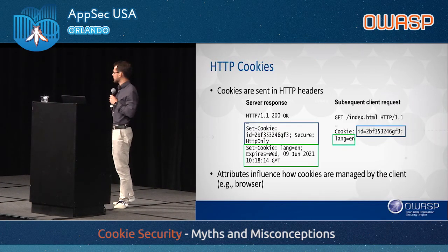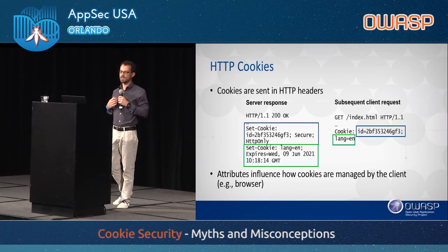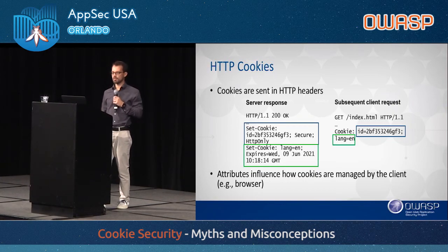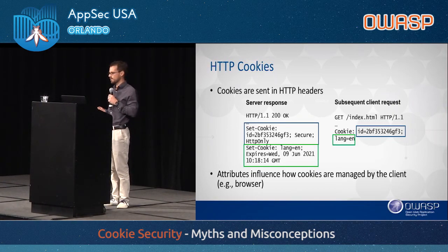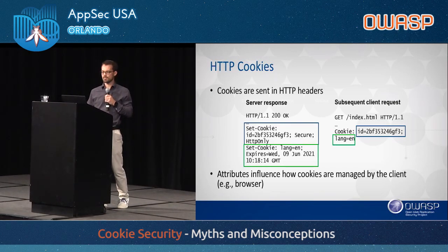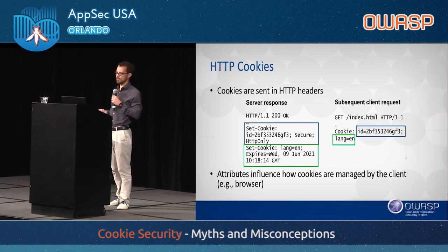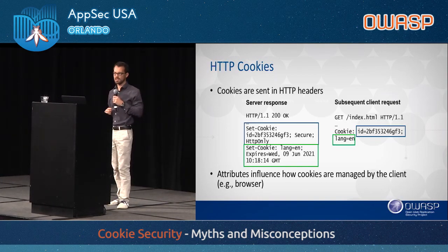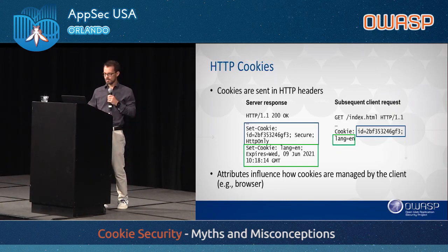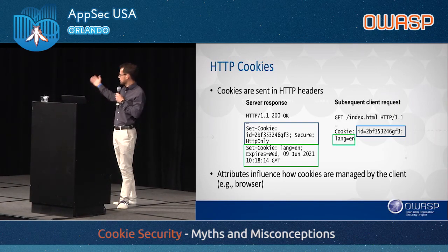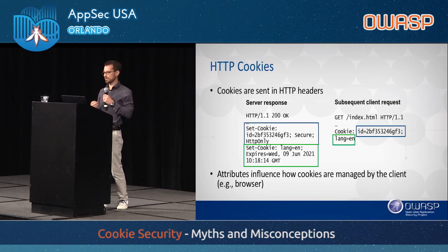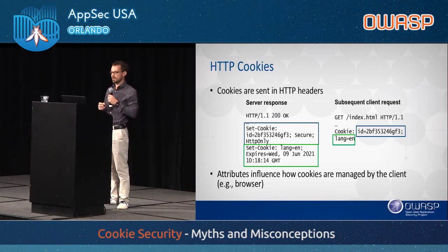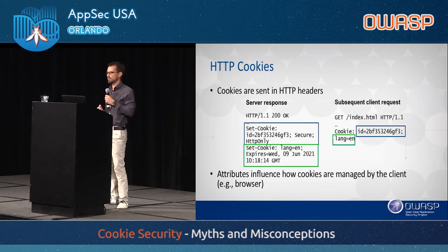How do cookies look? Cookies are typically sent in HTTP headers. One way to set a cookie is from a server response using a Set-Cookie header, and then subsequent requests from the client include these cookies in a Cookie header. Cookies can also be set client-side through JavaScript. Various attributes can be specified on a cookie that influence how it's managed by the client. Importantly, when the client sends cookies to the server, those attributes are no longer included — it just sends the name and value of the cookie.